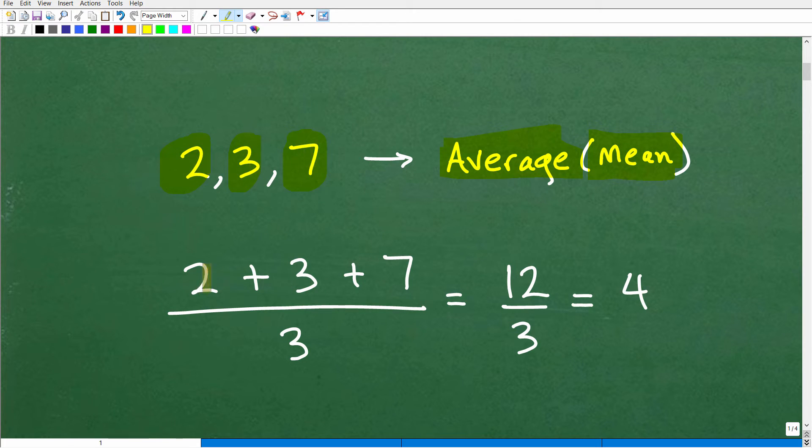Okay, so 2, 3, and 7. What we're going to do is we're going to add up these numbers. So that's 2 plus 3 plus 7. And then we're going to divide by how many numbers we have. So how many numbers do we have? We have 1, 2, 3. So we're going to divide by 3. So this is how you find the average. You add up your respective numbers, and you divide by the number of numbers you have. So 2 plus 3 plus 7 is 12. 12 divided by 3 is 4. So the average is 4.